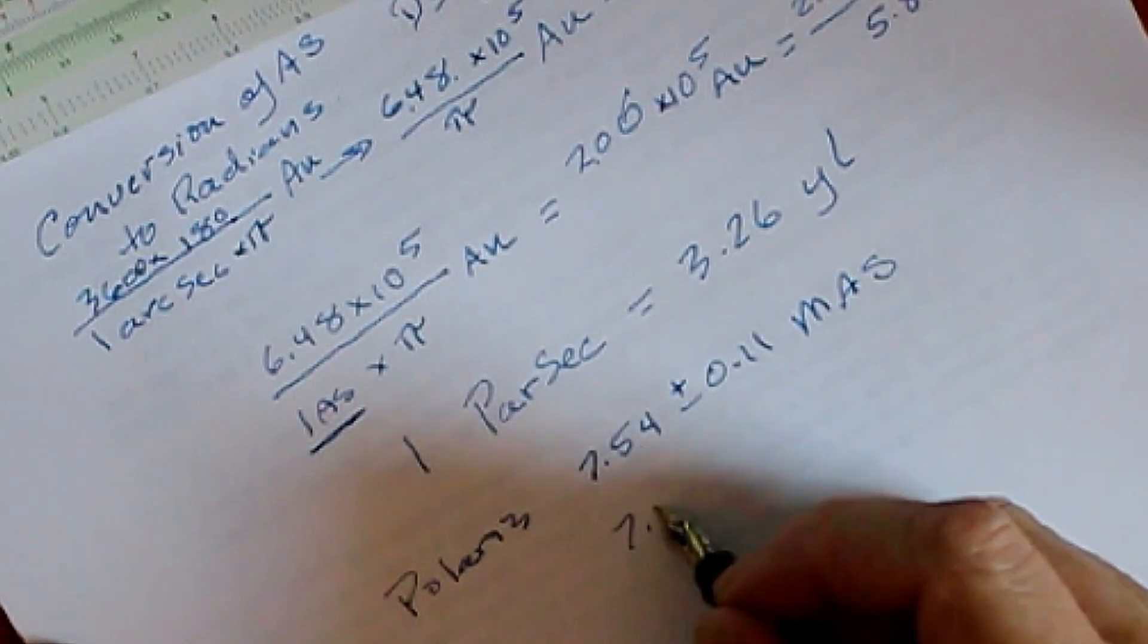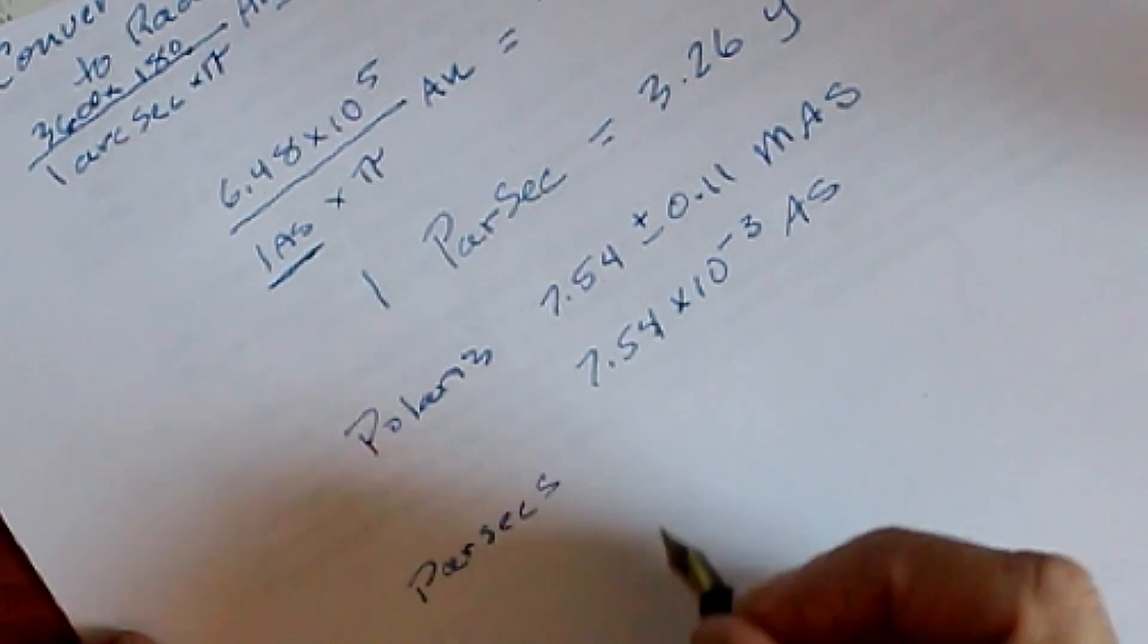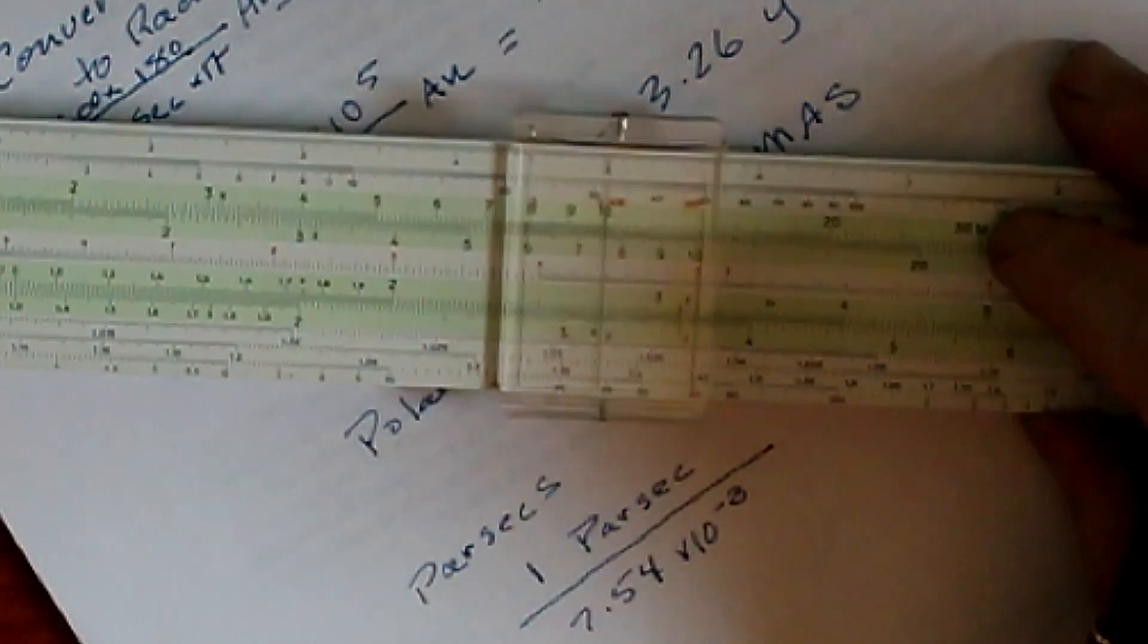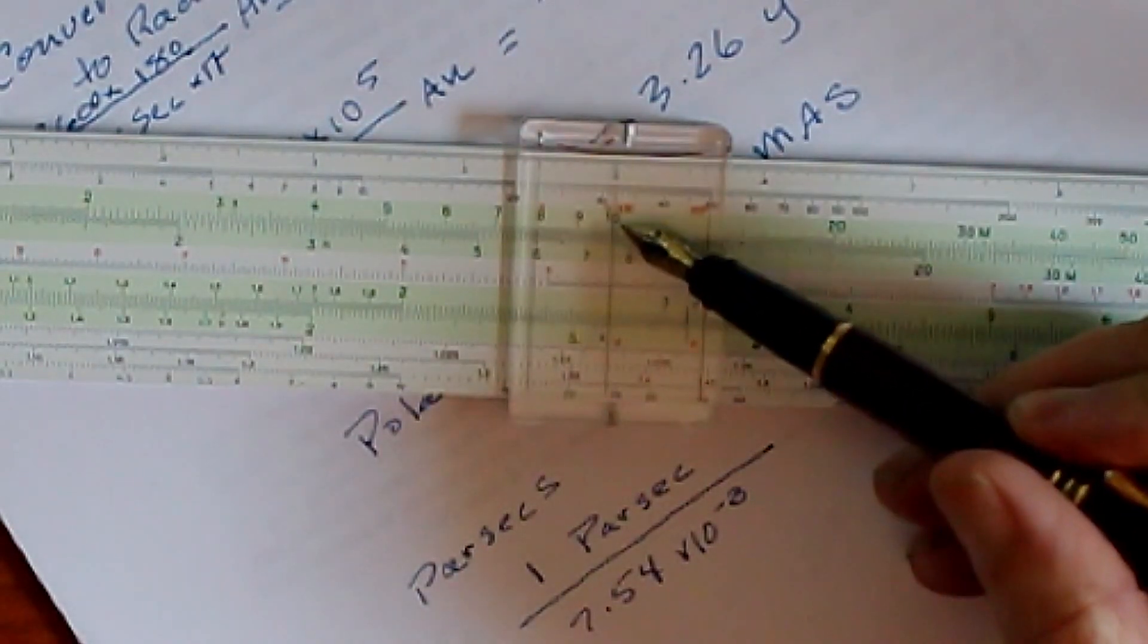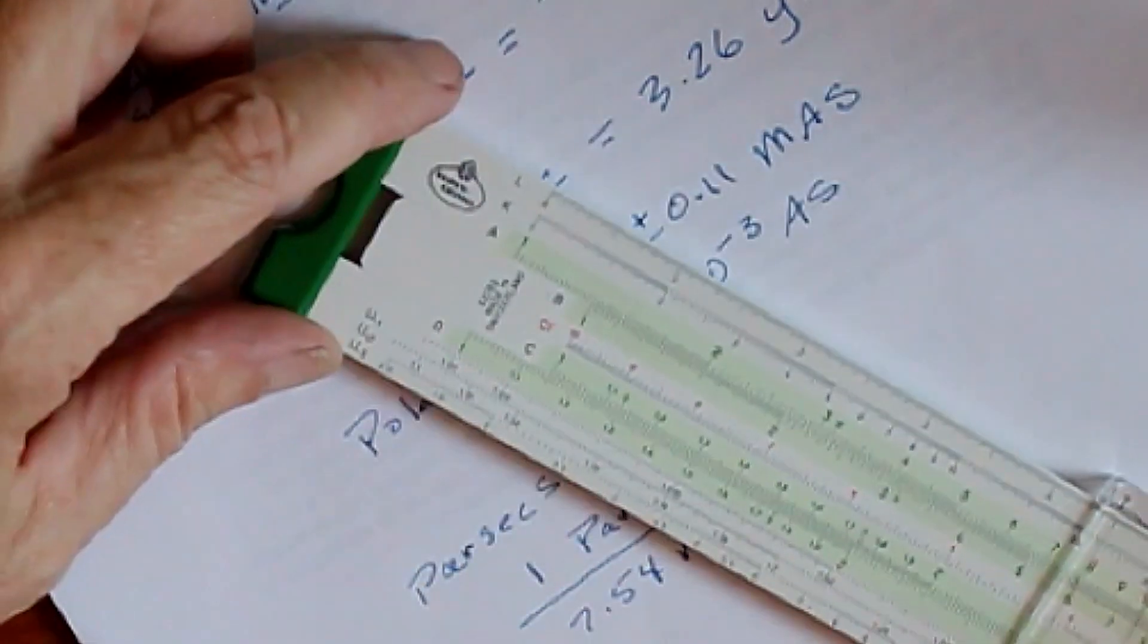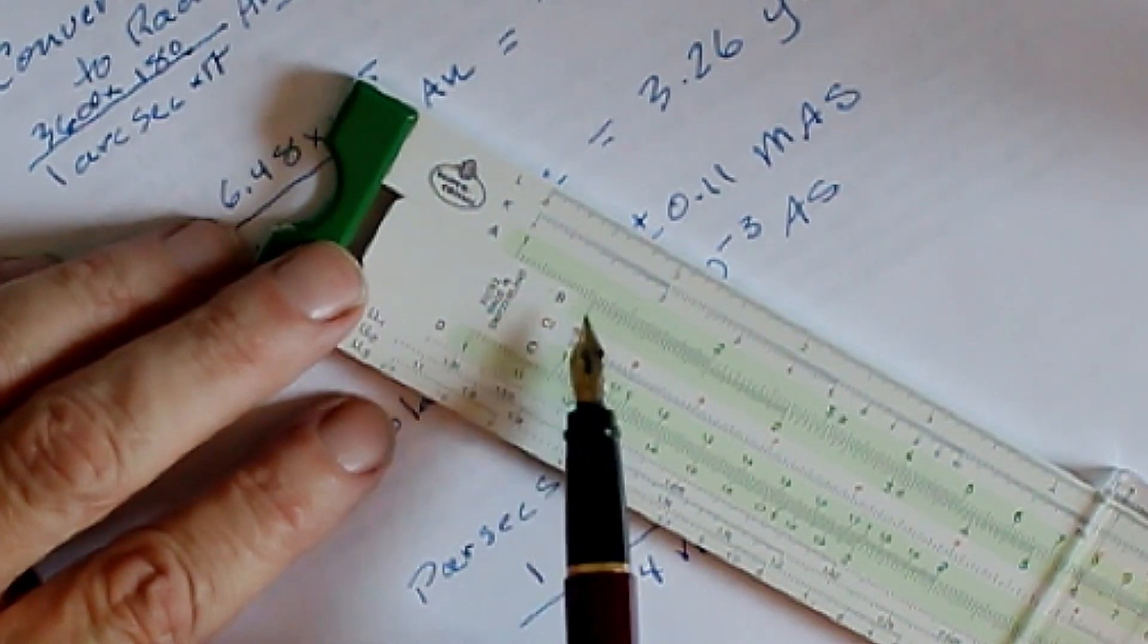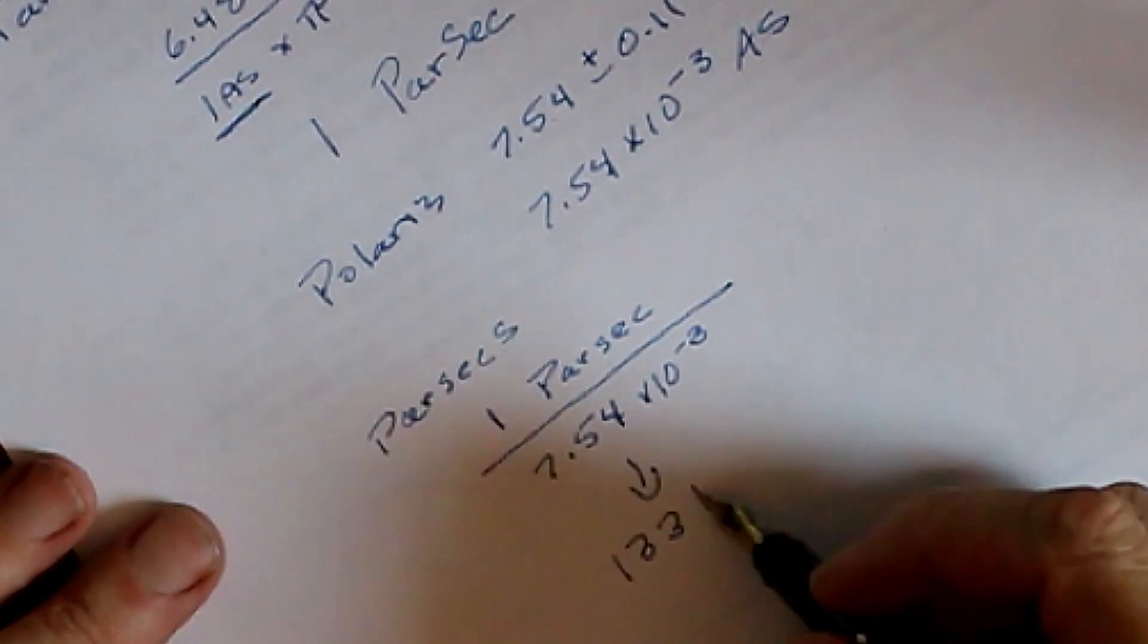One milliarcsecond means that this is 7.54 times 10 to the negative 3 arc seconds. So to find parsecs, we would take 1 parsec and divide it by 7.54 times 10 to the negative 3. So what we'll do is we'll take 1 divided by 7.54. Remember, the number that we're doing something to is on the body of the slide. Here's our answer right here. This is 1, 1.1, 1.2, 1.3. It looks like it's between the second and third increment here. So that would be 133 parsecs. And that is the actual distance to Polaris.